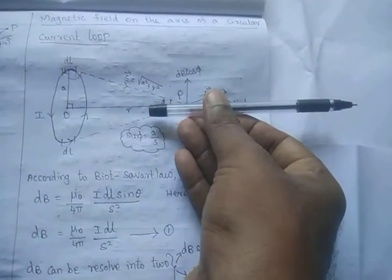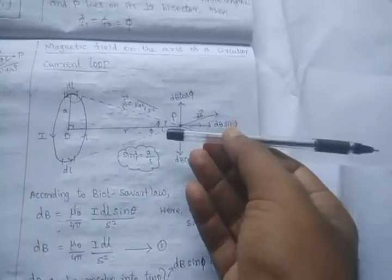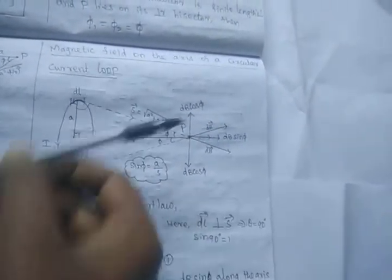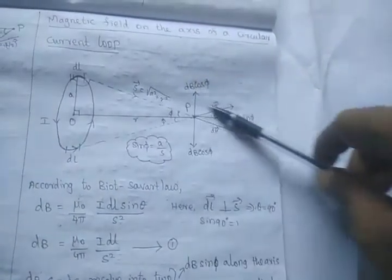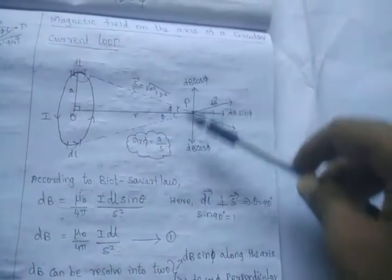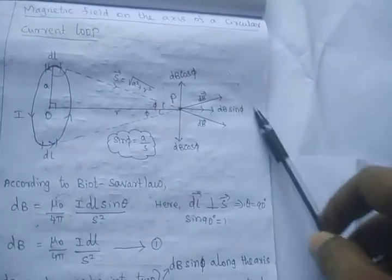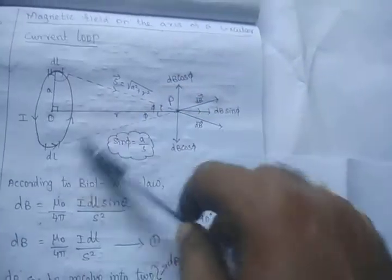The cosθ component is the horizontal component and the sinθ component is the vertical component. So the axial component is dB sinθ and the perpendicular component is dB cosθ. The cosθ component from one elemental length is in the downward direction, and from the diametrically opposite element it is in the upward direction — both cosθ components are equal and opposite and cancel each other. Both the sinθ components are in the same direction and add up. So dB sinθ gives the total magnetic field at point P for the entire circular loop.